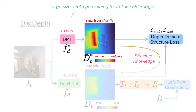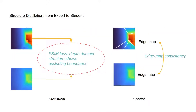Another branch adopts a large-size depth estimation network pre-trained on large-scale in-the-wild and mixed datasets. The pre-trained network generates suitable depth domain structures, but it only produces relative depth since it focuses on non-specific domains. We propose a distillation approach to transfer depth domain structure knowledge from the expert network to the student, focusing only on indoor spaces. In this way, we can predict both structured and metric depth and learn without curated depth ground truth annotations. SSIM loss for statistical constraints and edge maps for spatial constraints are also imposed.